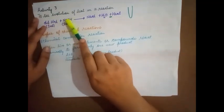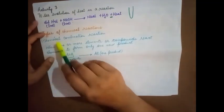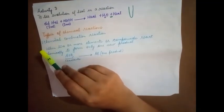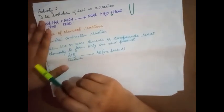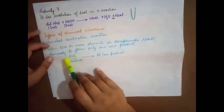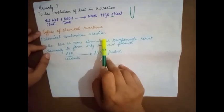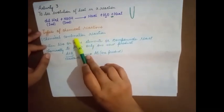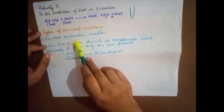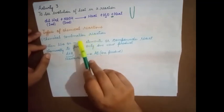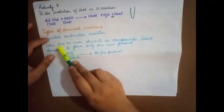This experiment shows the evolution of heat in a reaction. Next, we move on to types of chemical reactions. For today, we will discuss the very first type — the combination reaction. The name itself tells you that something is combining: two or more elements or compounds are put together.